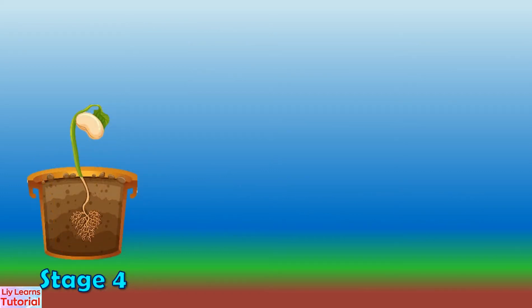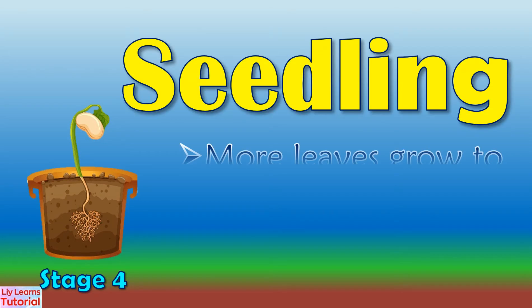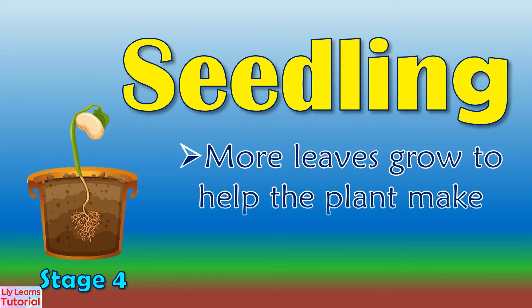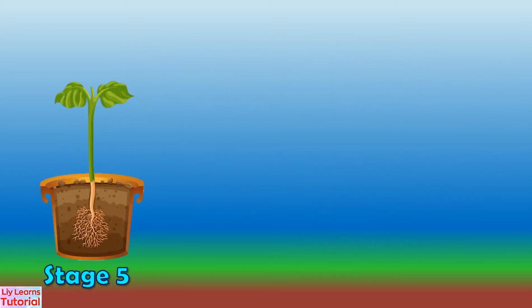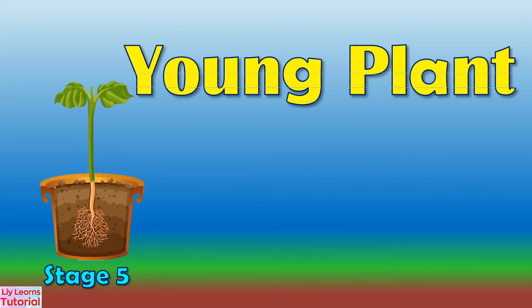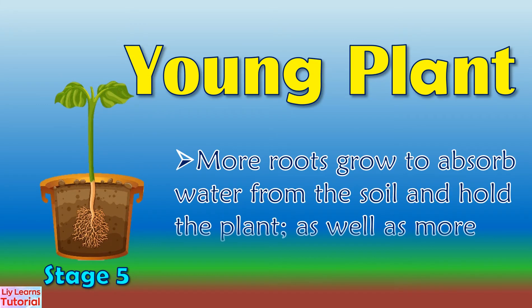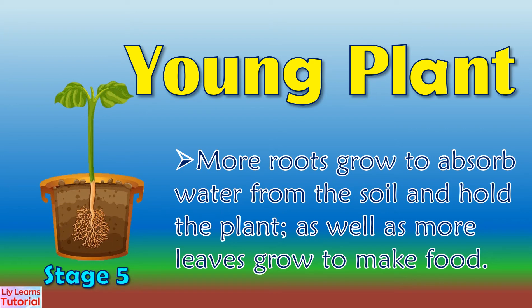Stage 4: Seedling. More leaves grow to help the plant make food. Stage 5: Young Plant. More roots grow to absorb water from the soil and hold the plant, as well as more leaves grow to make food.